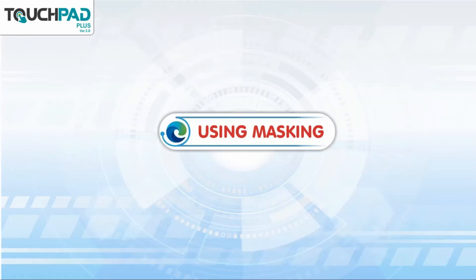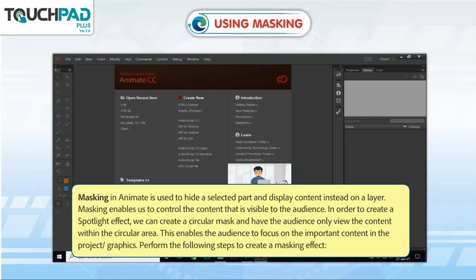Using Masking. Masking in Animate is used to hide a selected part and display content instead on a layer. Masking enables us to control the content that is visible to the audience. For example, to create a spotlight effect, we can create a circular mask and have the audience only view the content within the circular area. This enables the audience to focus on the important content in the project or graphics.